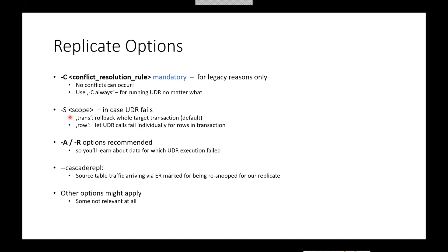The minus-A and minus-R options are very much recommended. Without them, you specify that you want to see so-called aborted transaction raw-information spooling files, only in the case of failure. This is really the only way for learning which transactions actually failed — otherwise you might get a message in the message log, but sometimes you don't even get that. You would not learn which transactions with which rows and tables were affected. All this information would be in those ATS/RIS files that you enable with these options.